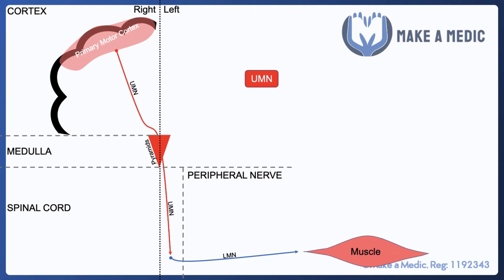Based on this diagram we can think about which types of diseases would cause upper motor neuron patterns. Things that affect the brain itself, such as a stroke or a space occupying lesion such as a brain hemorrhage or a tumor, can cause upper motor neuron signs. Similarly, certain subtypes of motor neuron disease primarily affect upper motor neurons, and multiple sclerosis is a condition characterized by demyelination of upper motor neurons.